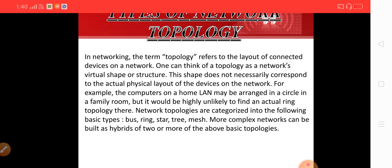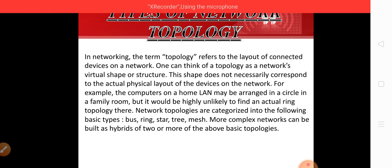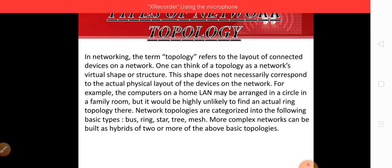Network topologies are categorized into the following basic types: bus, ring, star, tree, and mesh. So there are basically five types of topology. More complex networks can be built as hybrids of two or more of these basic topologies — when two or more topologies are combined to connect computers, that is called a hybrid topology.